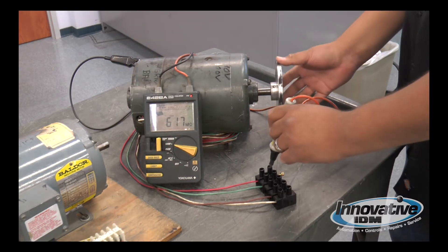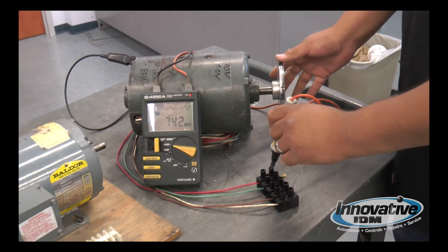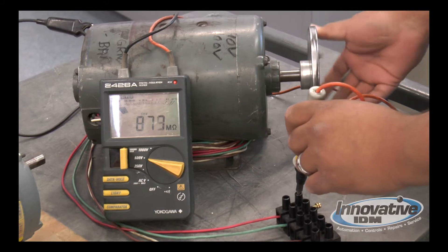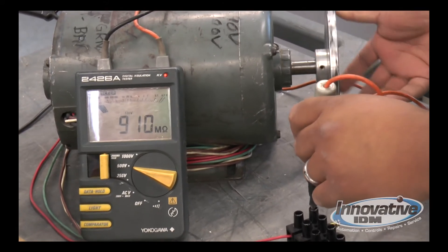What we're checking for is the motor not to be short with the chassis. We'll spin the motor. It'll read in the high megs, eight to nine megs.